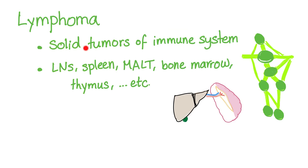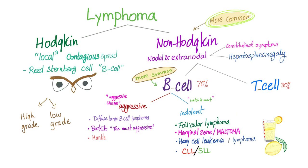Lymphoma is a solid tumor of the immune system, not only in the lymph node, but also spleen, mucosa-associated lymphatic tissue, bone marrow, thymus, etc. Lymphoma is divided into Hodgkin's and non-Hodgkin's, which is more common. Hodgkin's is local and nodal, while non-Hodgkin's is both nodal and extra-nodal.